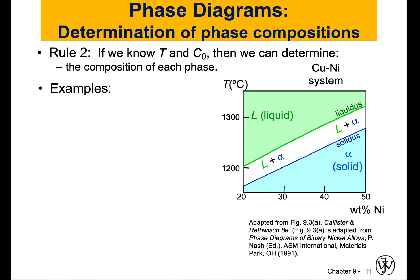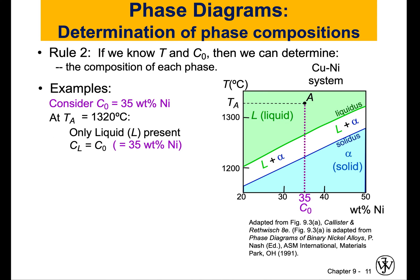Let's see what we mean by determining the composition of each phase and start with an example. Consider the first concentration: 35% weight nickel, which means 65% copper, and my temperature is 1320 degrees Celsius. If I draw the lines on the phase diagram, I will locate point A. If you look at the diagram, you can see that A is located in the green area, which is a liquid phase, and it's one phase only.